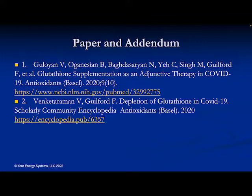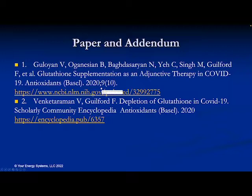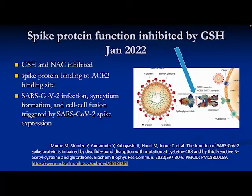Here are two studies that discuss the mechanism of glutathione depletion in COVID-19. The easiest to find — just put 'encyclopedia 6357' into a search engine and it'll pull up the study. This information was added after the first study was published and goes into greater detail, showing conditions associated with severe COVID and its complications.